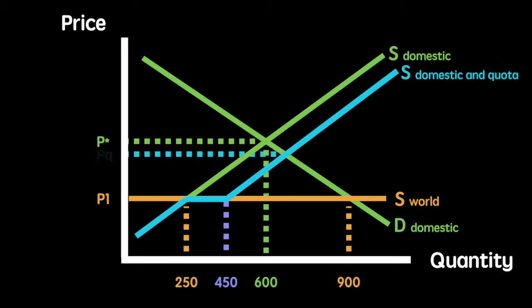Domestic producers will be incentivized to supply the market and continue to do so until equilibrium price PQ is achieved. Beyond P1, our supply curve has shifted rightwards by the amount of the quota. The overall quantity traded in the market post-quota is 650 units.